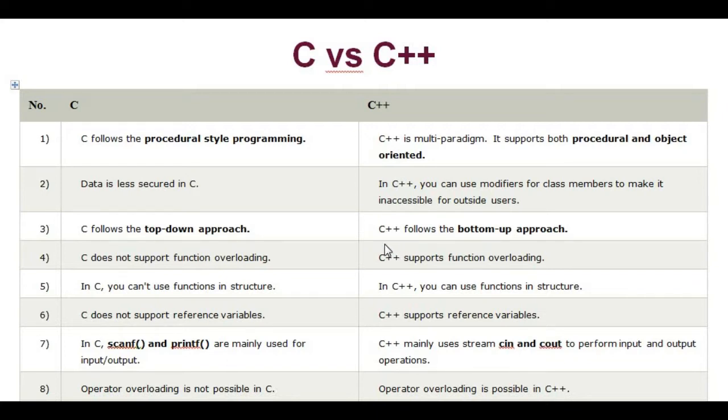C follows top-down approach, whereas C++ follows bottom-up approach. C does not support function overloading. C++ supports function overloading.